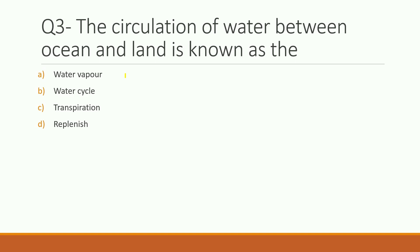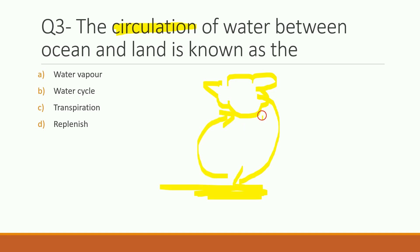Third question: the circulation of water between ocean and land is known as what? The options are water vapor, water cycle, transpiration, or replenish. The right answer is water cycle. Water circulates between the ocean and the land through the water cycle process.